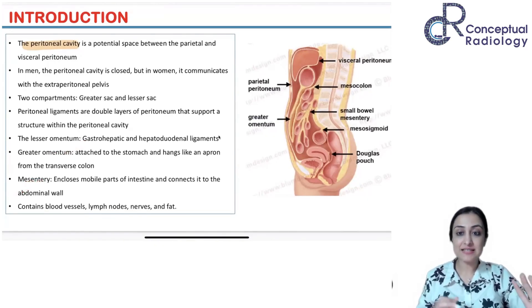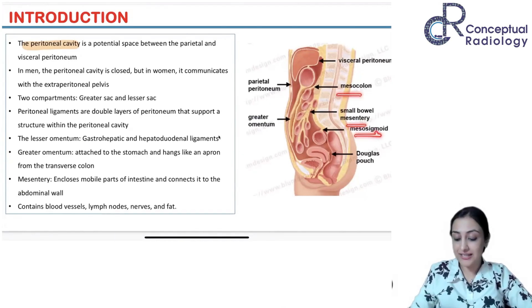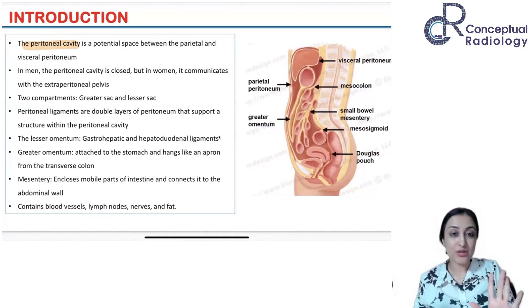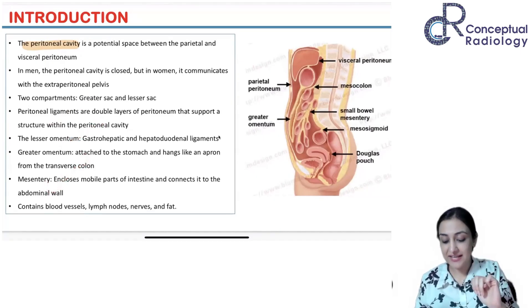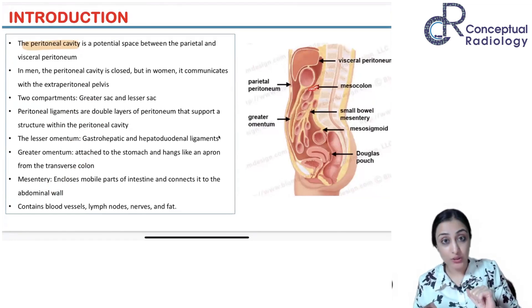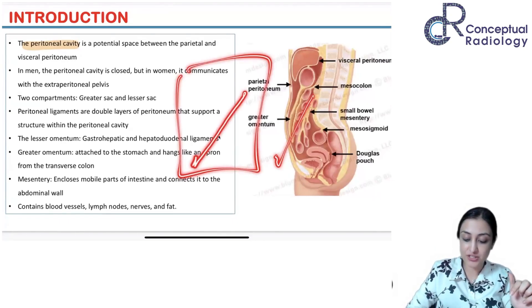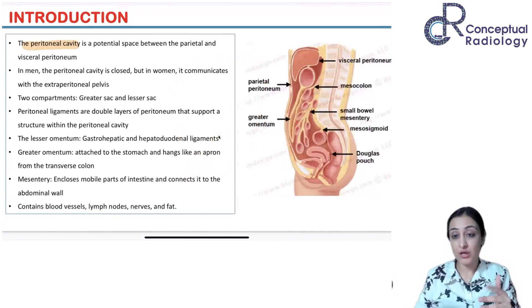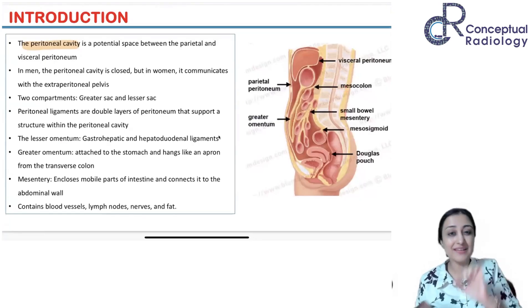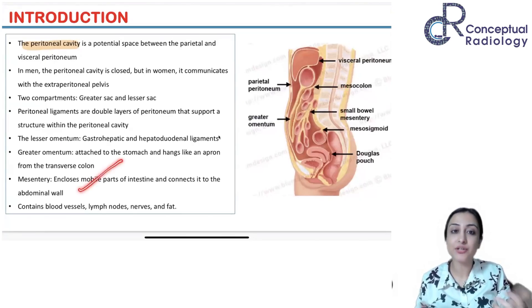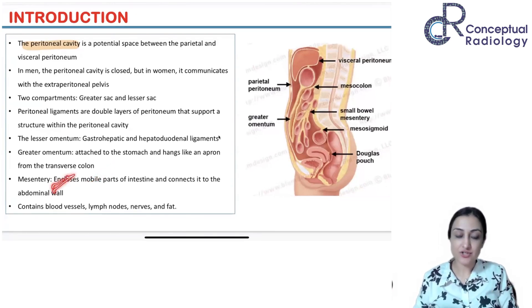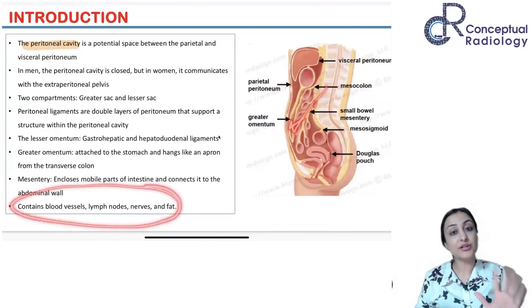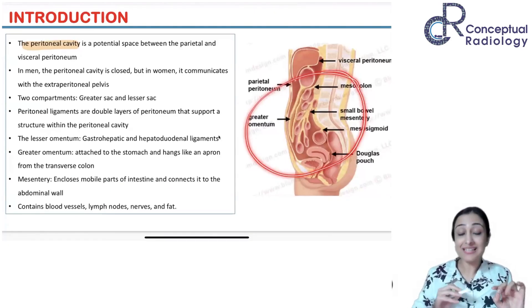Then we have the mesentery. The mesentery is present for specific parts of the bowel — there are three kinds of bowel attached by mesentery to the posterior wall. First is the mesocolon for the transverse colon. Then you have the small bowel mesentery, which runs from the DJ flexure to the right iliac fossa. Then you have the meso-sigmoid. The job of the mesentery is to take all the blood vessels and connect them to the different parts of the bowel loop.